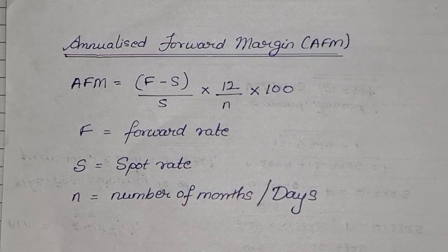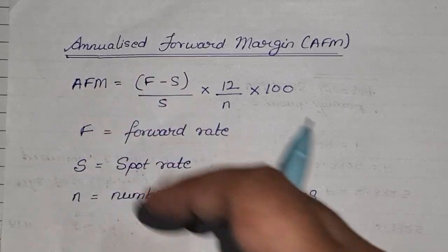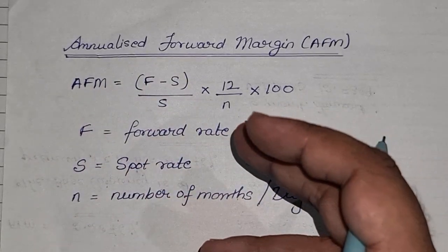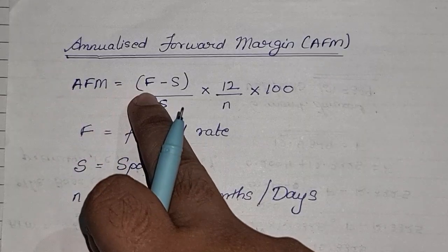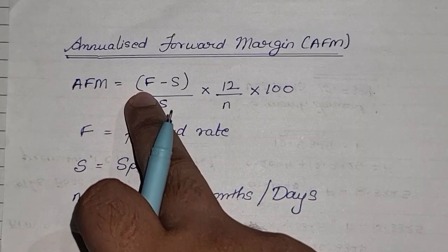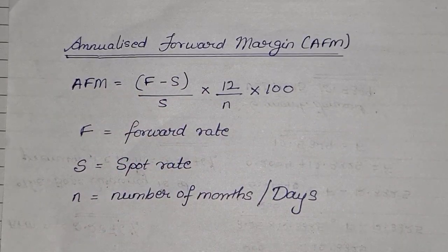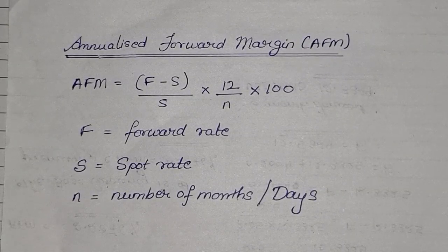In order to understand this, we are going to take up 3 different sums. In the first, we will be finding the annualized forward margin. In the second type, the annualized forward margin is given and they are asking you to find the forward rate. And in the third, both annualized forward margin and forward rate are given, and they are asking you to find the spot rate. These three sums will cover up this entire topic.